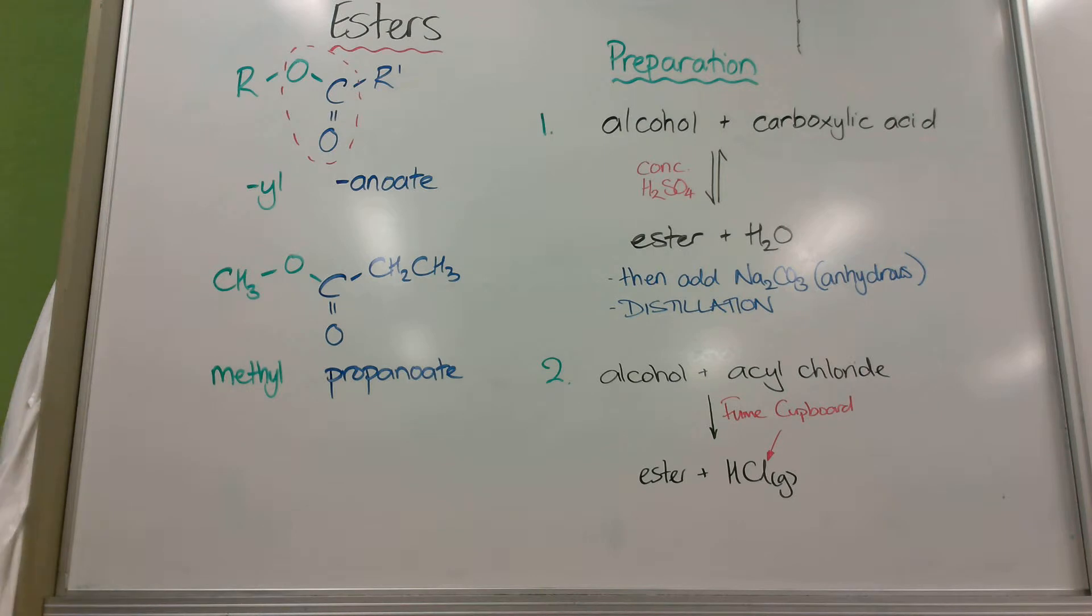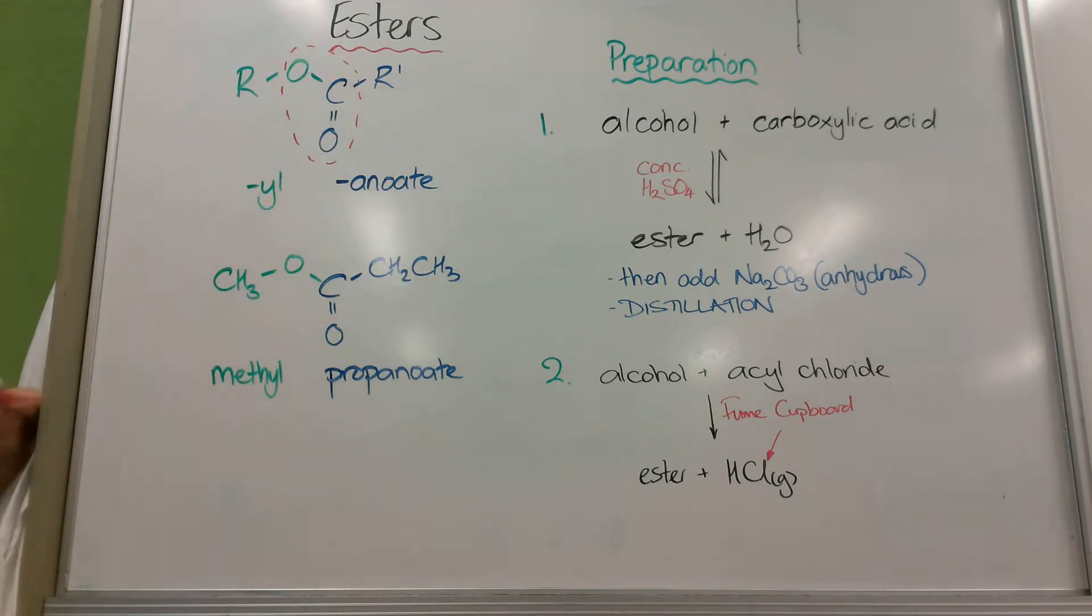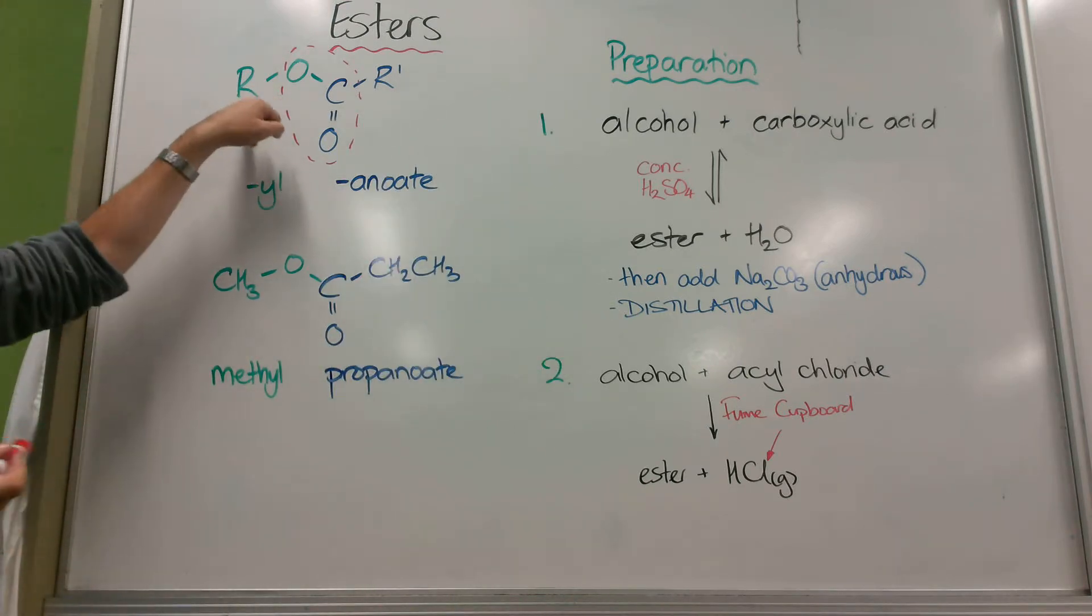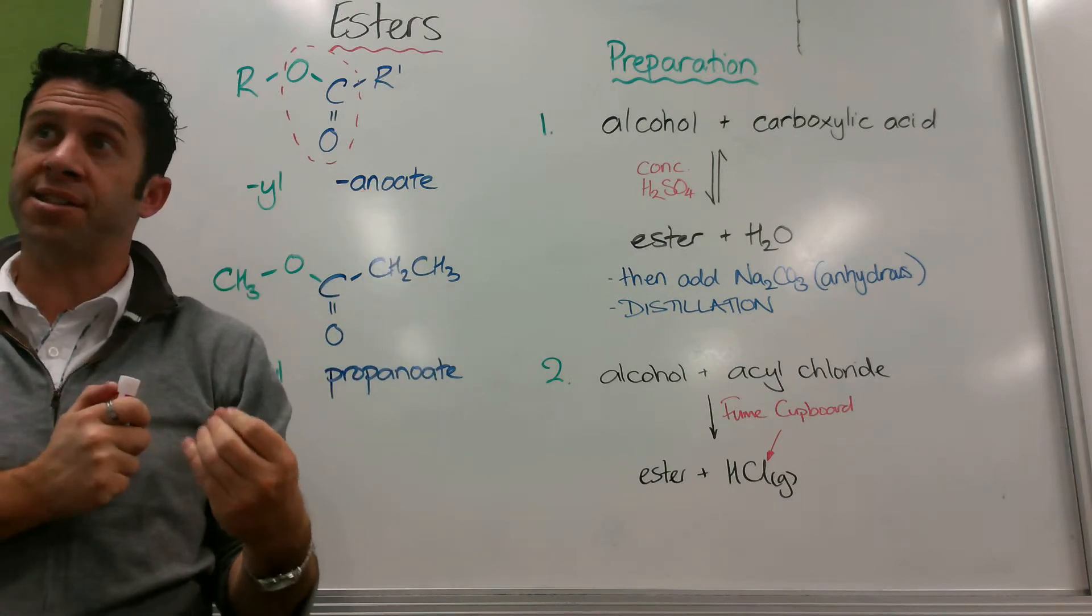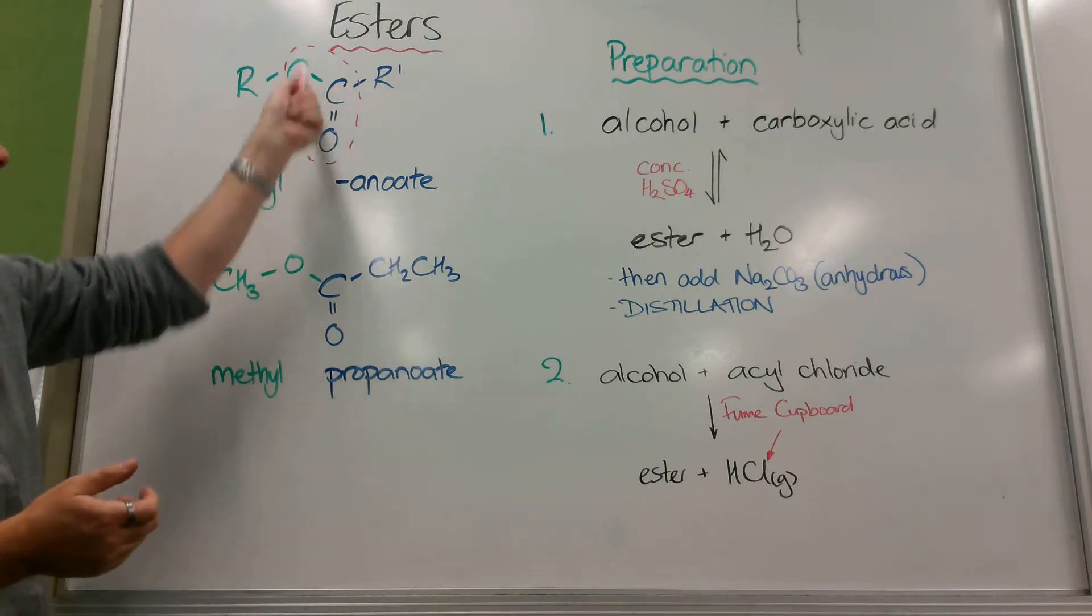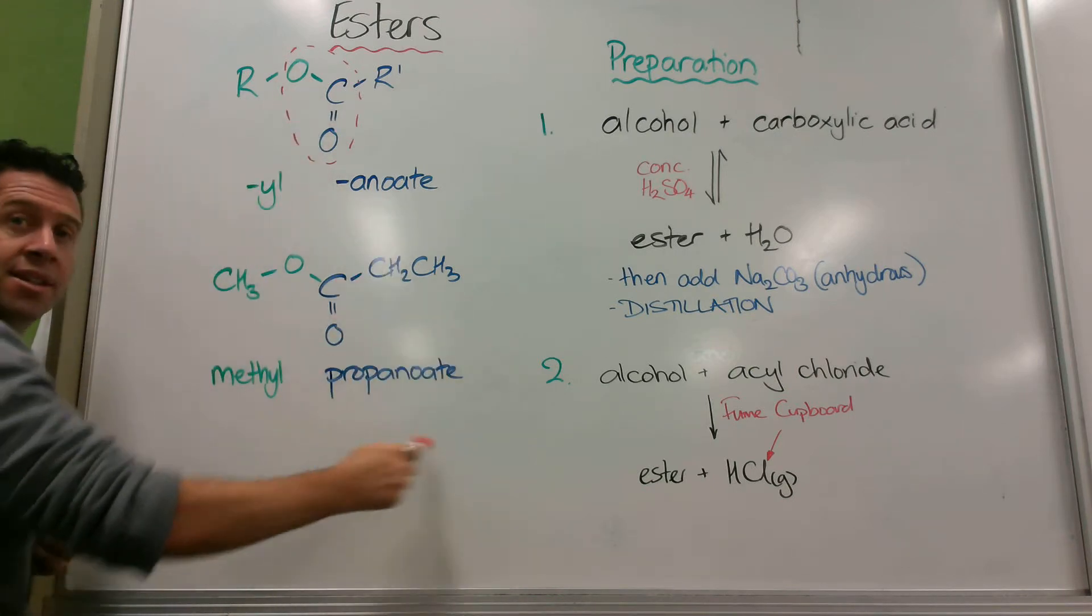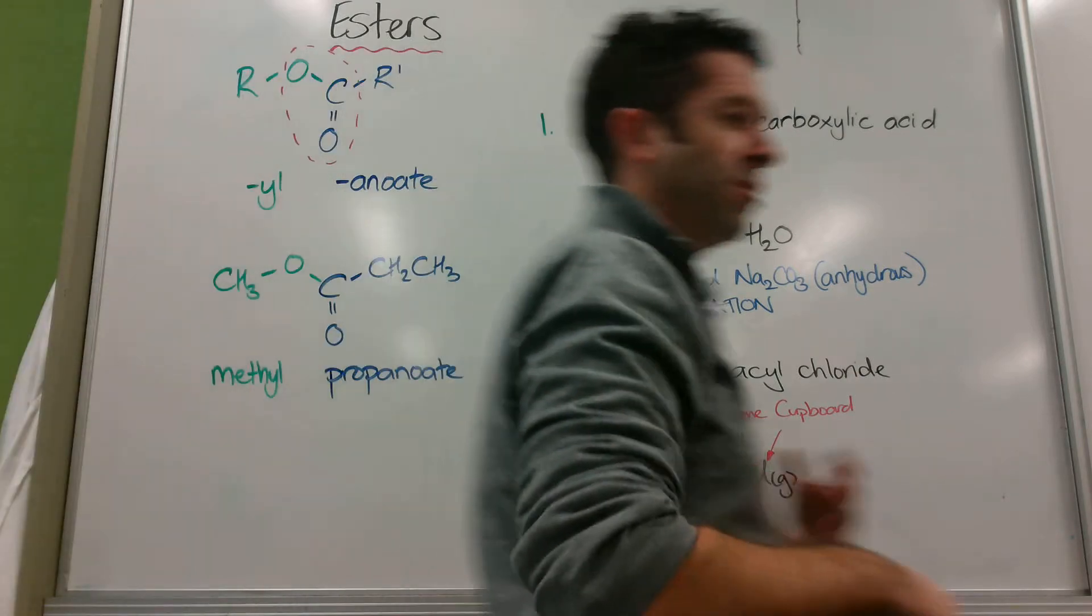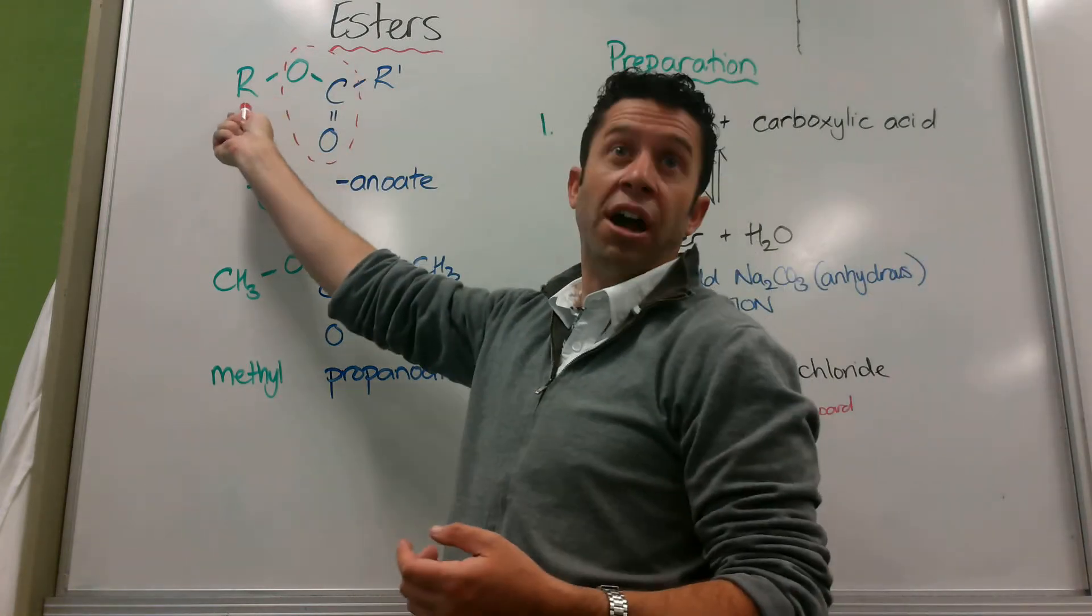The easiest way to look at it is look for this functional group, COO with a carbon chain either side. If you see the carbon chain either side, the one that's bound to the oxygen is a side chain. The one with the COO attached to it is the carboxylic acid ion as it were. So that's how we name them. Treat them like a carboxylate ion with a side chain.